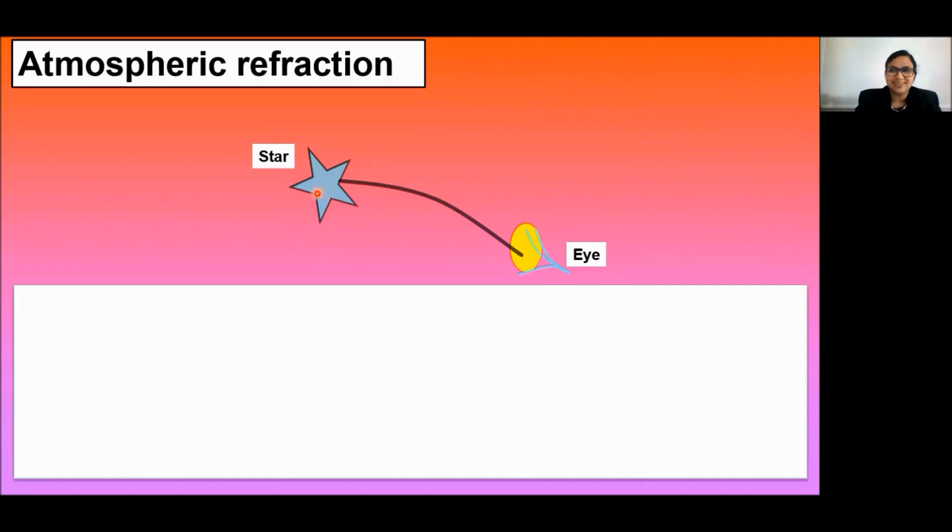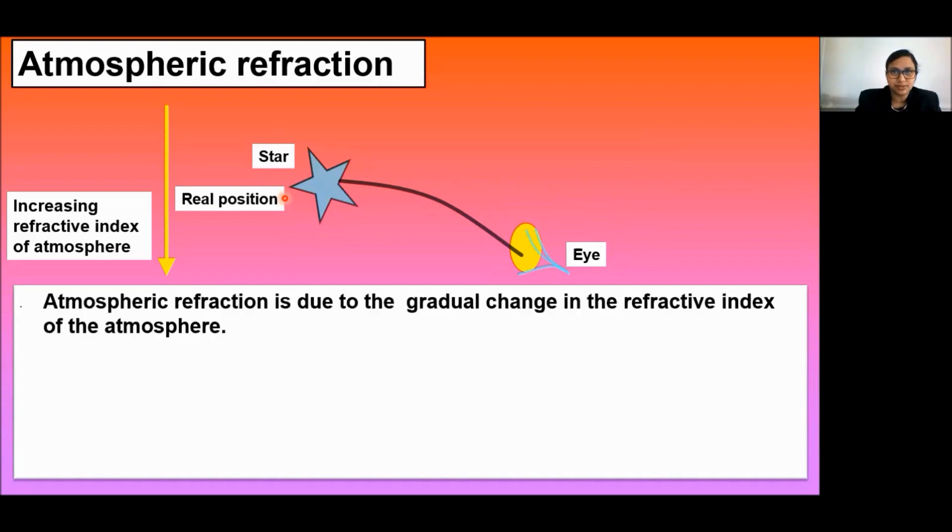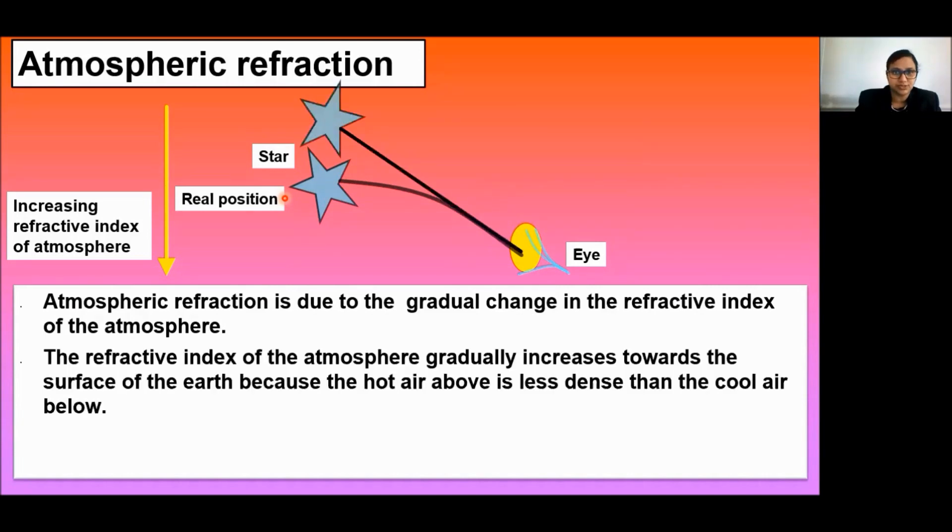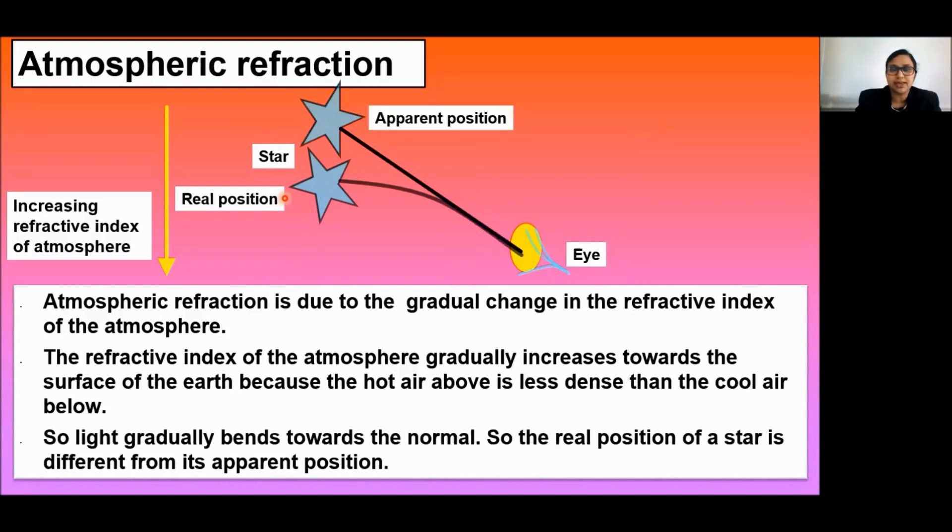We know that the stars are very distant. This is the real position of the star. What happens? The refractive index of the atmosphere gradually increases towards the surface of the earth because the hot air above is less dense than the cool air below. So light gradually bends towards the normal. So the real position of a star is different from its apparent position. Atmospheric refraction is due to the gradual change in the refractive index of the atmosphere.